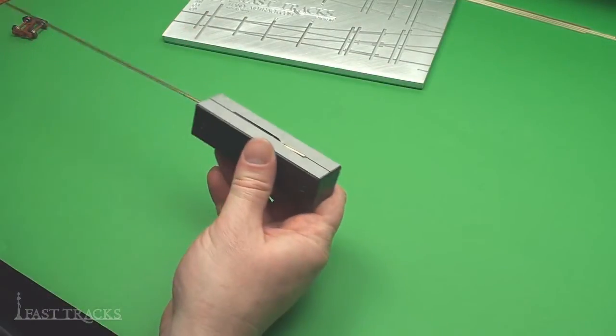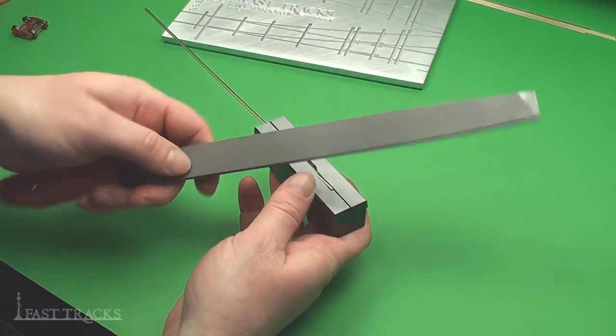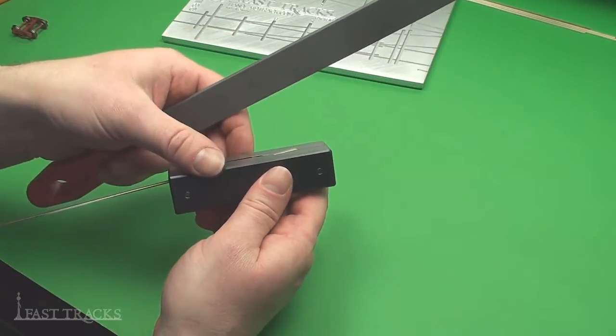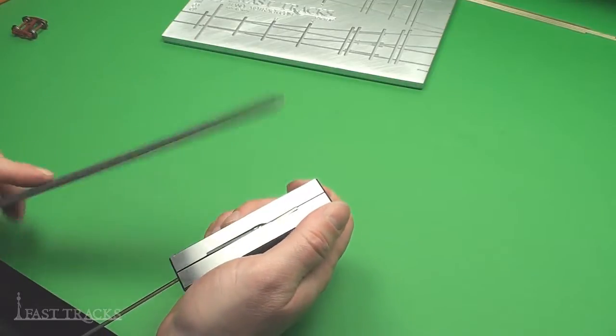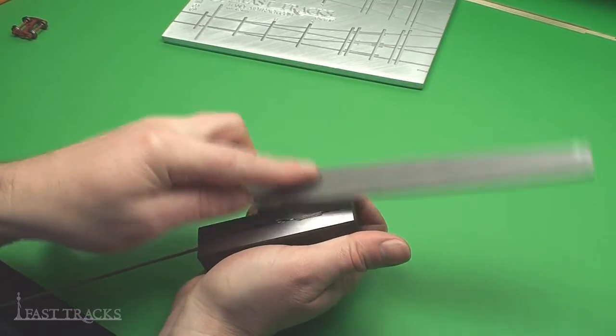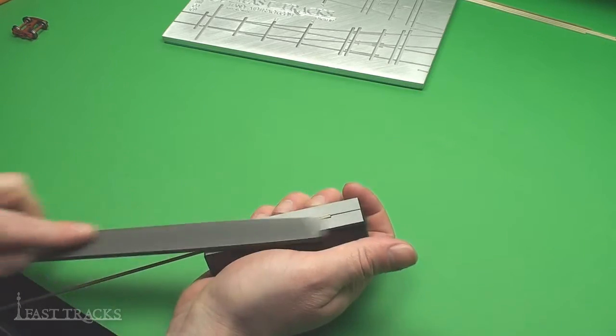So with the rail in the tool, I'm going to use a nice sharp file and file off the rail that's exposed along the edge of the tool. And that's fairly easily done. It's important that you file along the full length of the tool and you want to file towards the end of the rail.